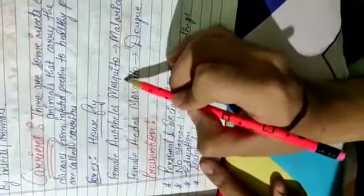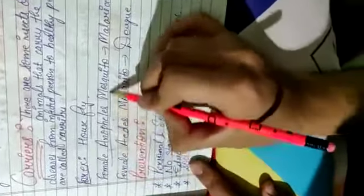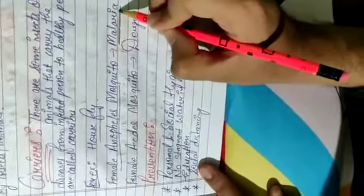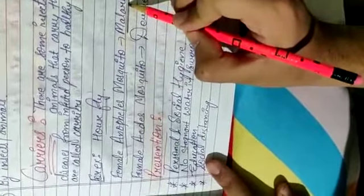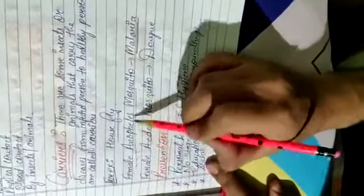Another very important one is the female Anopheles mosquito. It is a carrier that carries the disease of malaria. Malaria is a disease, and the carrier of malaria is the female Anopheles mosquito.